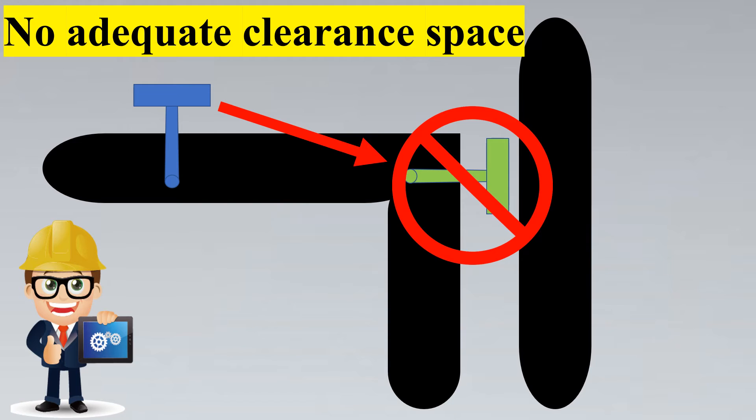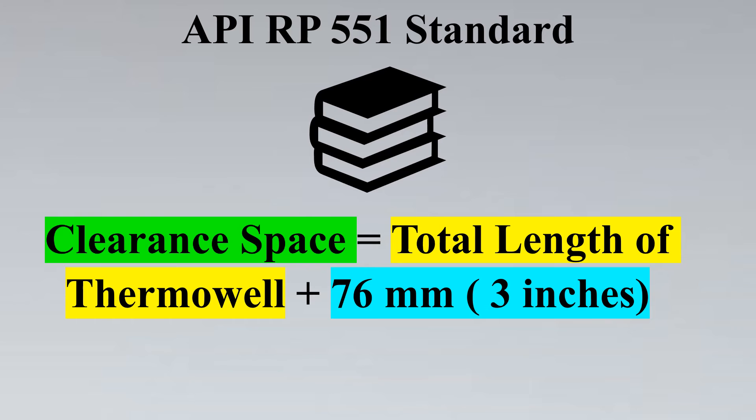We should not follow such places where there is absolutely no place to remove the thermowell out. But you would have the next question as to what should be the clearance space? How much clearance space should we give? For this one of my most recommended practice that I personally find very valuable is API RP 551 standard and this standard states that the clearance space should be total length of the thermowell plus 76 mm or 3 inches. So a little bit of safety margin added so you can remove the entire length of thermowell outside. If you want to dig deep into it, here is the page number which is page number 25 of API RP 551 where you can dig deep into the standard.